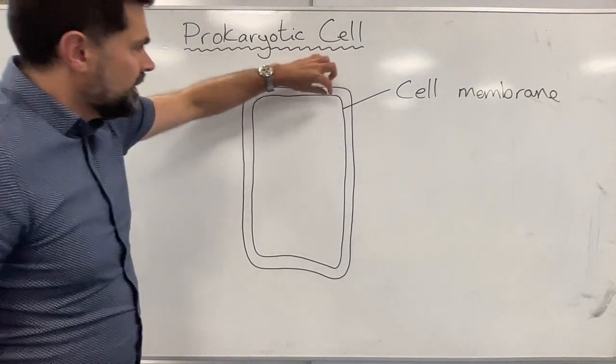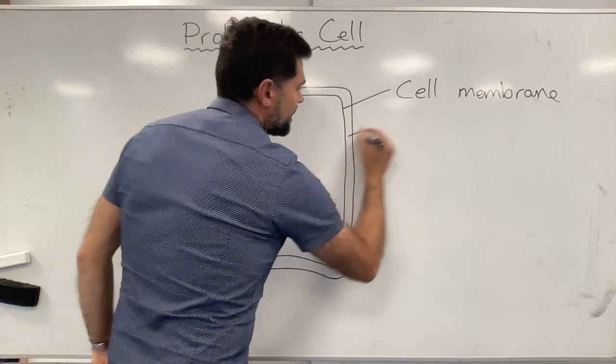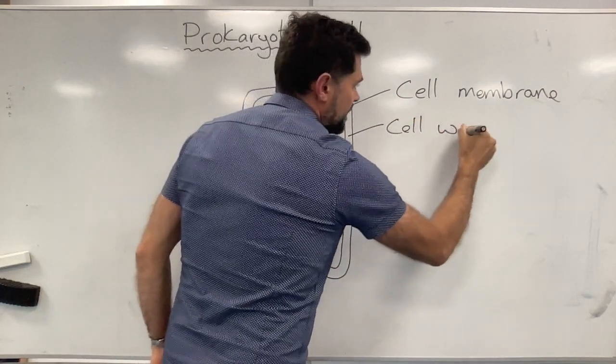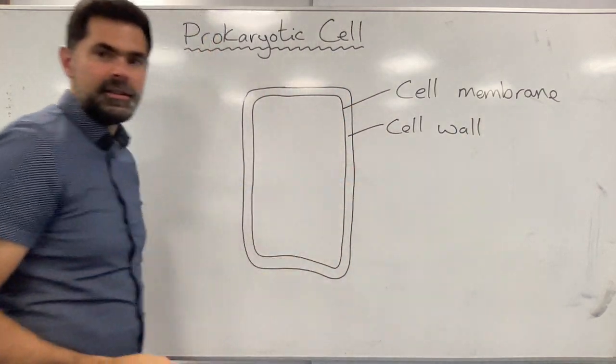The cell membrane is really thin so we just use a single line to represent it, but the cell wall is thicker, so in this case we say this whole part here is the cell wall.